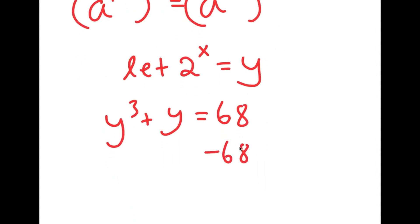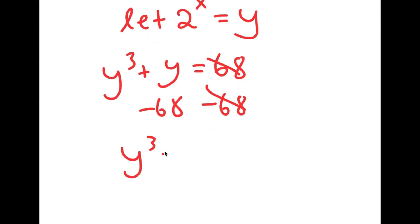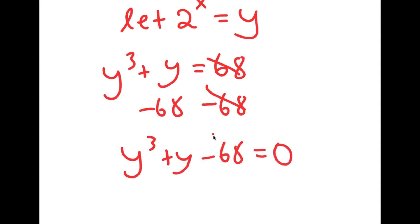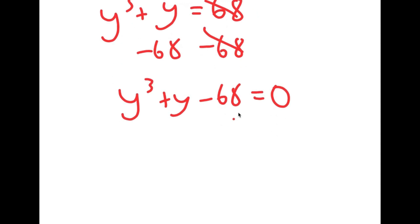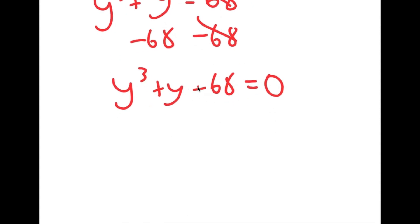Now I can subtract 68 on both sides, so I get y to the power of 3 plus y minus 68 is equal to 0. To actually factor this and find the value of y, I need to first find the factors of 68.